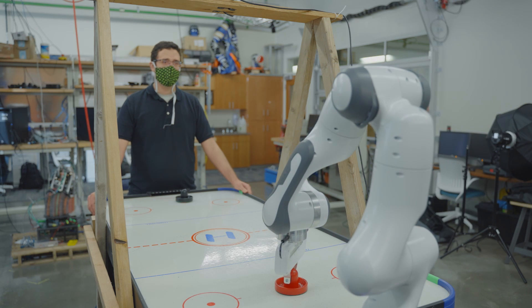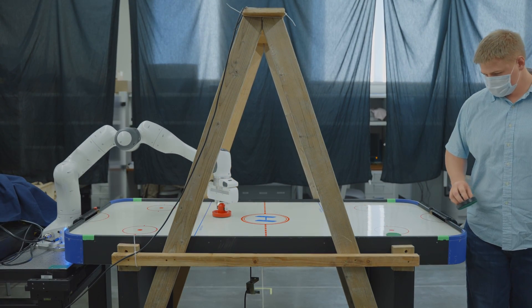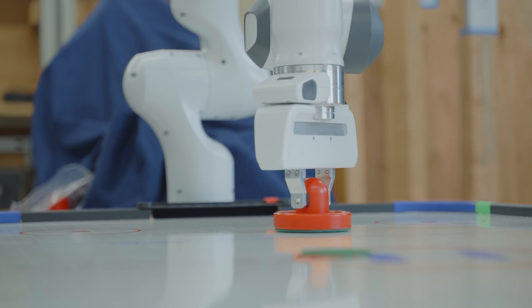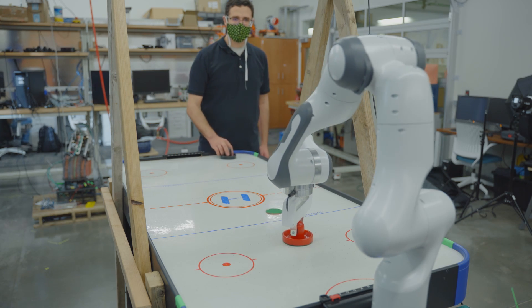For this project, we have taught this robot how to play air hockey. We have a camera system up on top of this A-frame that tracks this green puck. It will move to intercept the puck along its path and then send it back towards the other player.